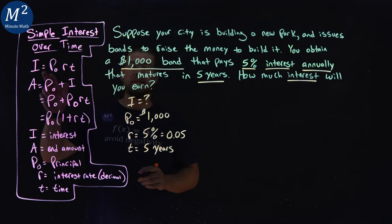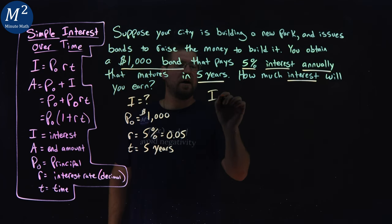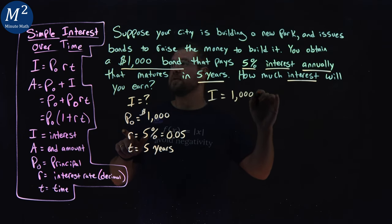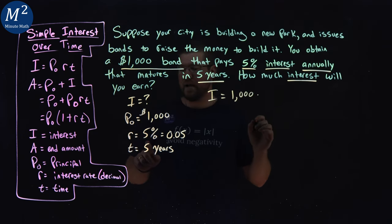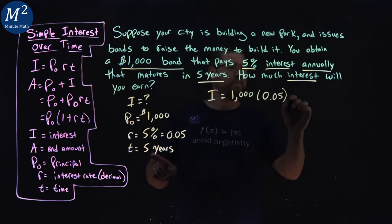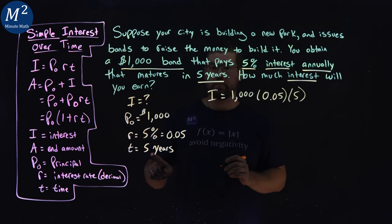So if we use our interest formula here, I equals P sub O, $1,000 times our rate as a decimal, 0.05. I'm going to put a parenthesis there. Times our time, five years.